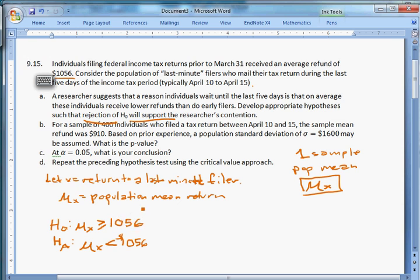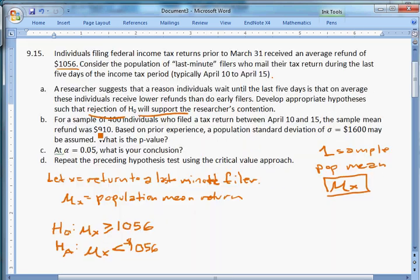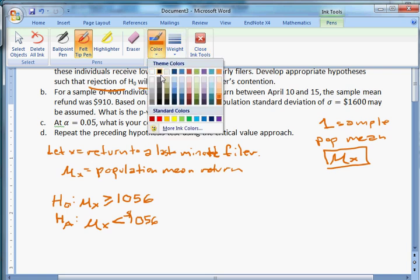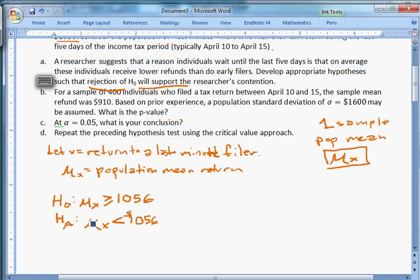Now the null, what we're going to assume is that, in fact, the researcher is wrong. They receive greater than or equal to $1,056. This way, we're giving the benefit of the doubt to the argument against the researcher, which means that if he proves the null false, then he's given a strict test. He really knows that this is true. So this is part A. We have our two hypotheses written down. And that's step one. Step two is usually choose a level of significance. I'm going to pull it from part C just so I can write it out. We have alpha equals 0.05.